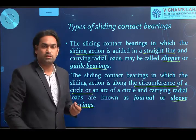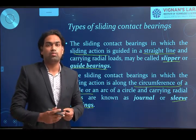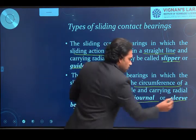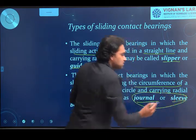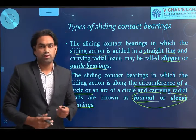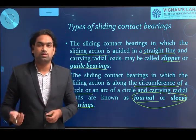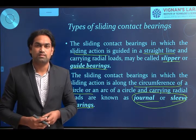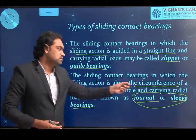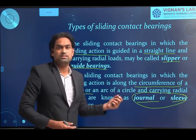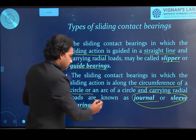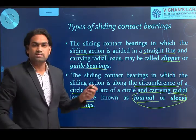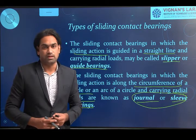Focusing on our syllabus, we are going to mainly focus on sleeve or journal bearings. If these sleeve bearings are subjected to a radial type of load — we have already seen how loads act; if the load acts perpendicular to the axis of the shaft, we call it radial bearings — then if these plane bearings are subjected to radial loads, they are known as journal bearings or sleeve bearings.